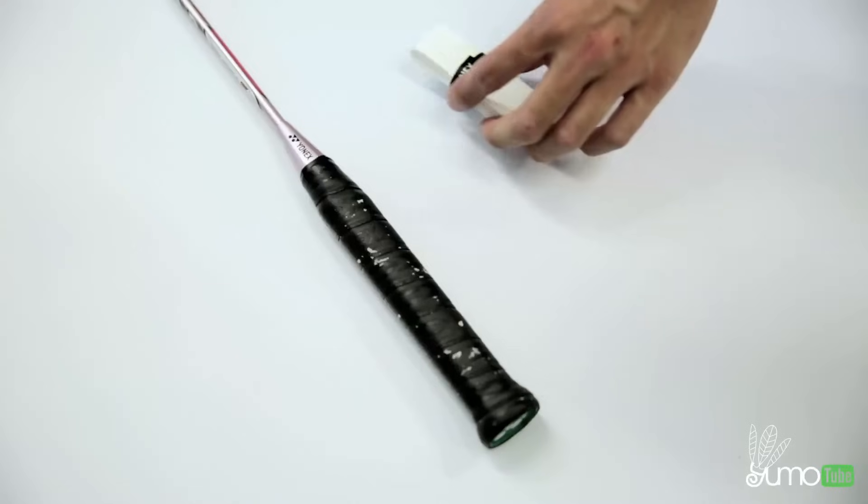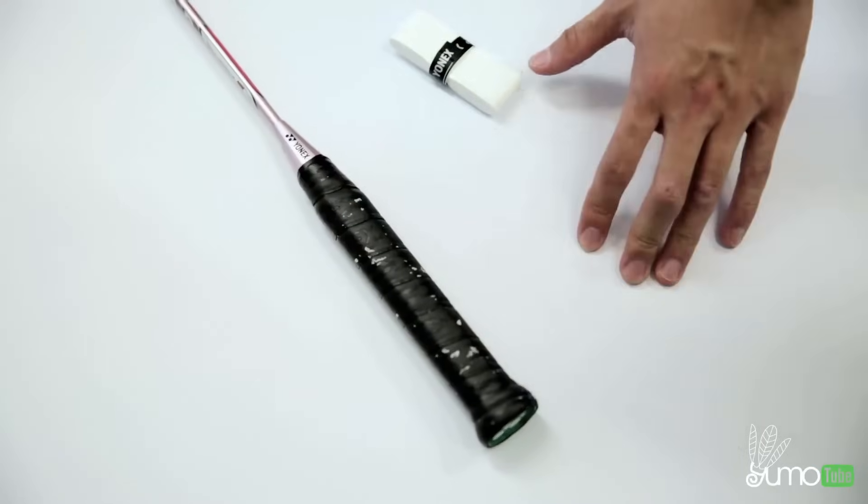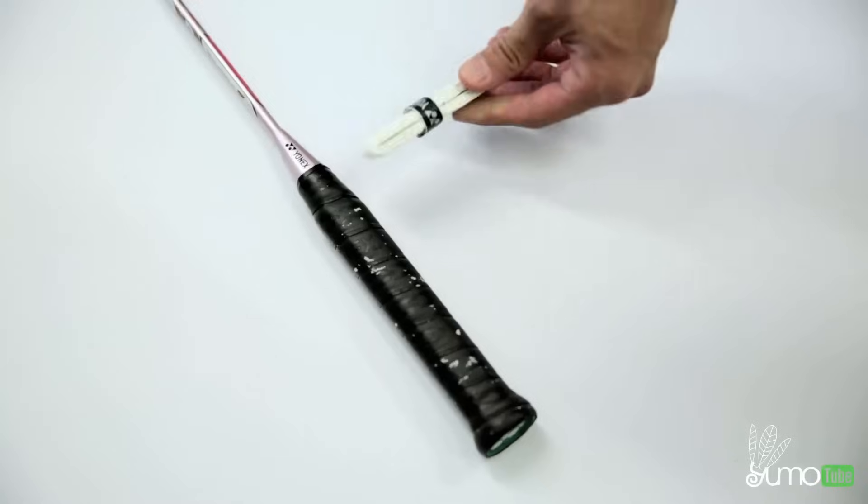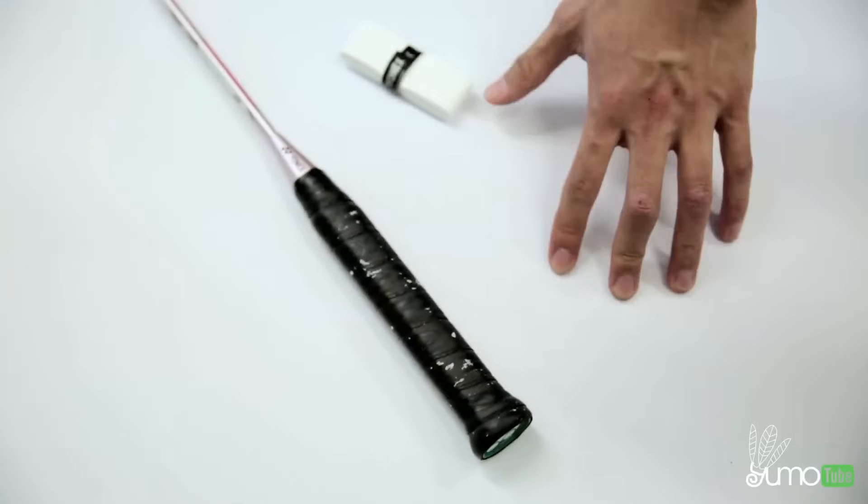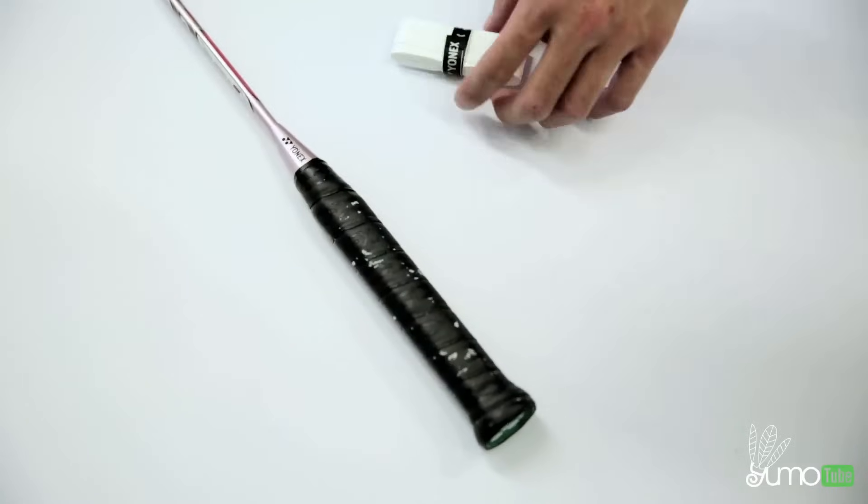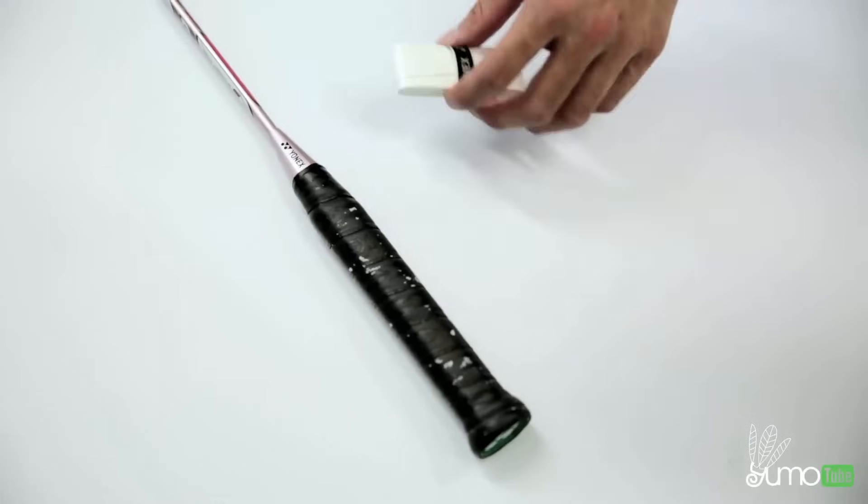So you can choose to take off this original leather grip before you put on the overgrip if you want to keep the grip size relatively small, but if you are okay with the bigger grip then you can just put it right on top.